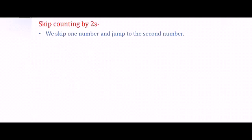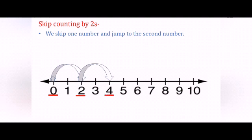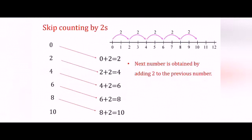We have just seen skip counting by 2s with the help of pencils. Now let's see skip counting by 2s on a number line. Here is the number line from 0 to 10. In skip counting by 2s we skip one number and jump to the second number. Look at the arrow — it starts from number 0, skips a number which is 1, and lands on number 2.